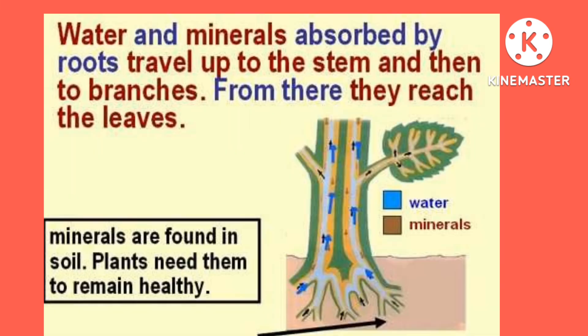Function of the stem — the stem is useful to the plant in many ways. It holds the plant upright and supports branches. Leaves, buds, flowers, and fruits grow on the stem. The stem spreads out branches and leaves so they get maximum sunlight. It carries water and minerals from the roots to other parts of the plant. It carries food prepared by leaves to different parts of the plant. Stems of sugarcane, potato, and ginger are thick as they store food in them and are edible. The stem of some plants also helps in reproduction.